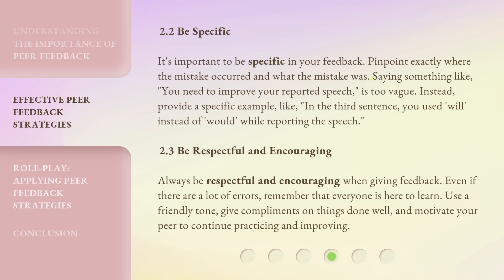Strategy 2.2: Be specific. It's important to be specific in your feedback. Pinpoint exactly where the mistake occurred and what the mistake was. Saying something like, 'You need to improve your reported speech,' is too vague. Instead, provide a specific example, like, 'In the third sentence, you used "will" instead of "would" while reporting the speech.'